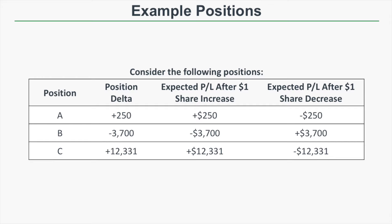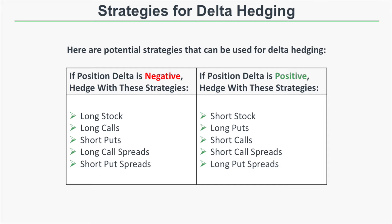Let's say a trader has one of these positions and wants to reduce their directional risk by reducing their position Delta, but doesn't want to completely take off that initial position. Here's how a trader could implement a Delta hedge. The following table shows strategies to reduce directional or Delta risk of an existing position. To reduce a negative Delta position, you can use long stock, long calls, short puts, long call spreads, and short put spreads.